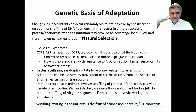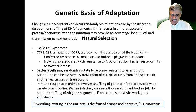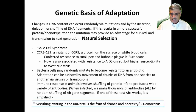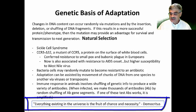CCR5 delta 32 is also associated with resistance to AIDS infection, but conversely, people with this particular mutation have a higher susceptibility to the West Nile virus. So sometimes mutations can be interesting because they can give you advantages in some ways and disadvantages in another. Before leaving this slide, I want to return to a quote from the philosopher Democritus, who lived around 400 BC, who said: 'Everything existing in the universe is the fruit of chance and necessity.'